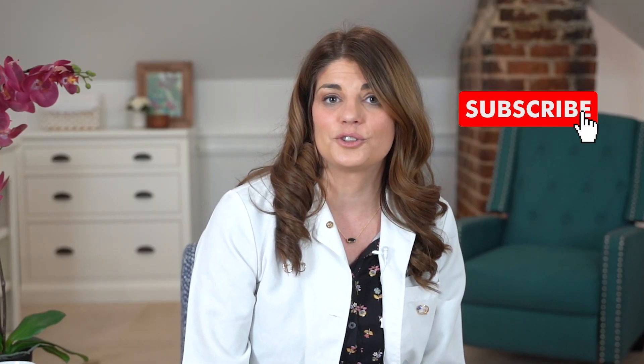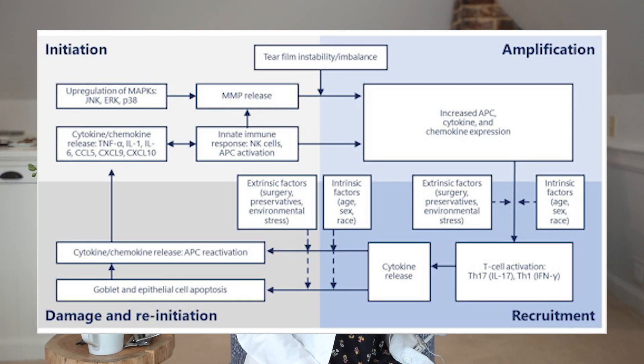Over time, dry eye disease may progress into a chronic condition and can potentially damage the surface of the eye, increase the risk of infection, and even impair vision. Dry eye disease is an extremely common condition that affects nearly 30 million adults in the United States. I have a graphic here I'll throw on screen to show you the inflammation that occurs at the ocular surface in dry eye disease.